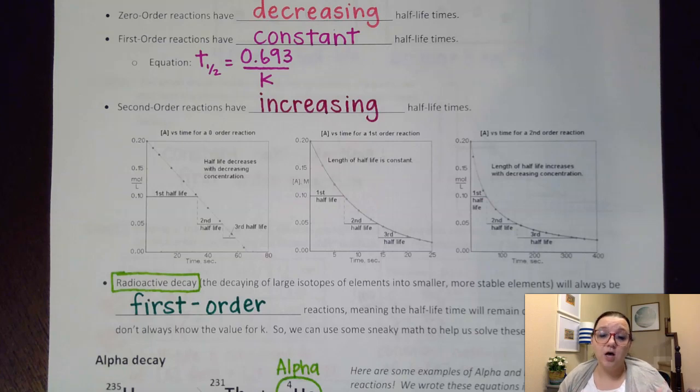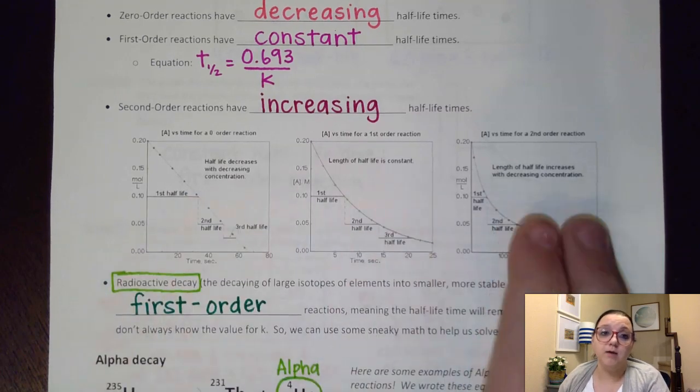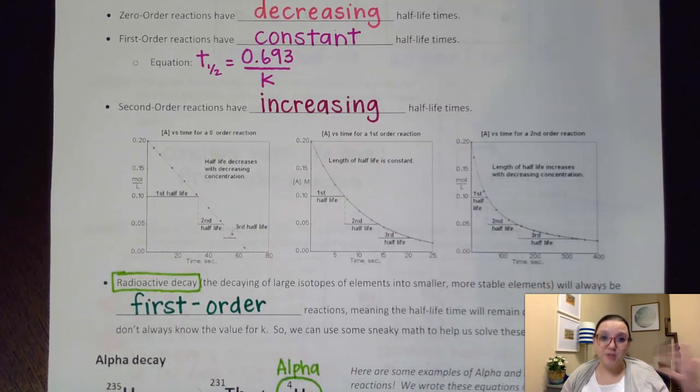This is the reason why on a lot of the problems that we saw last video, we looked at calculating the initial half-life time. What was the half-life at the very beginning of the reaction? And the reason why they specified that was because if we had a zero-order or a second-order reaction, that half-life time would change as the reaction progressed. And so that's why we needed to be very clear that we were trying to calculate that for what it was initially and not later on in the reaction.